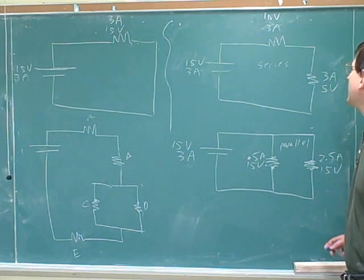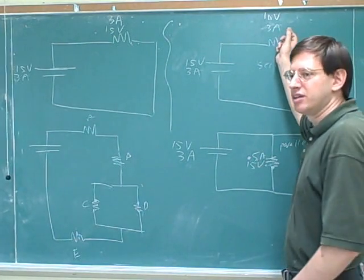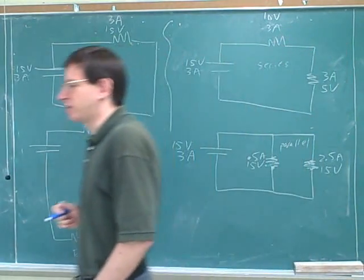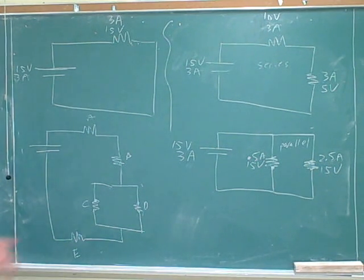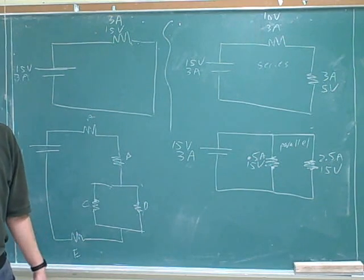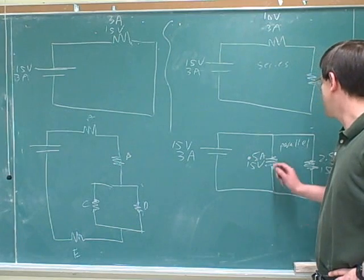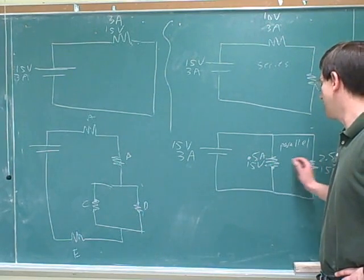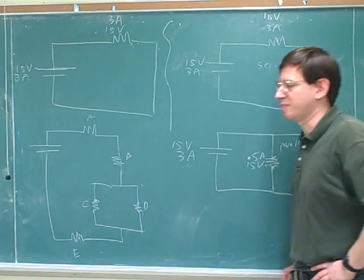What we just learned here is that when devices are in series, they have to have the same current. Devices in series have to have the same current. We shouldn't try to memorize that — it should be obvious from our ski lift analogy. If two points are in series in the ski lift path, they have to have the same flow of skiers through both of them. And if two points are in parallel, they have to have the same voltage drop.